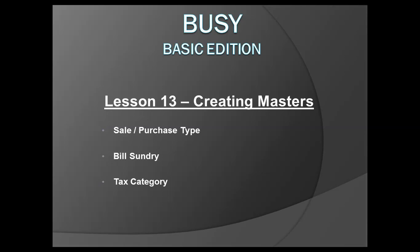Lesson 13: Creating Masters. In this chapter we'll discuss creating sale purchase type masters, bills sundry master, and tax category master. In our previous chapter we discussed creating account and item masters. Here we'll cover what sale purchase types are used for, how to create them, bills sundry for additional footer information like discounts and taxes, and tax category which specifies the tax rate applied whenever an item is used in any transaction.